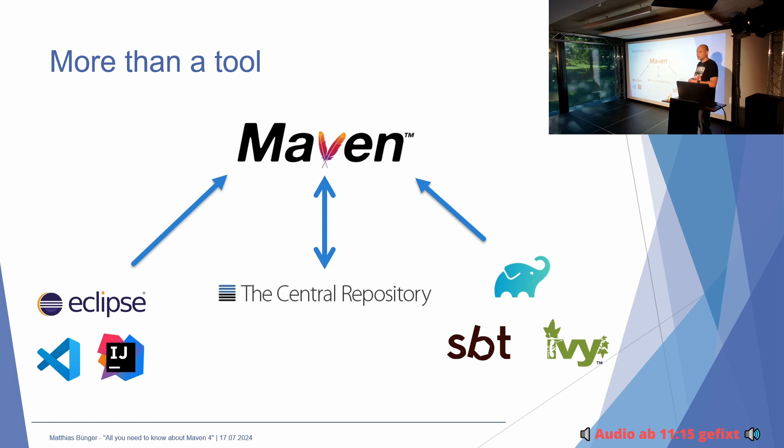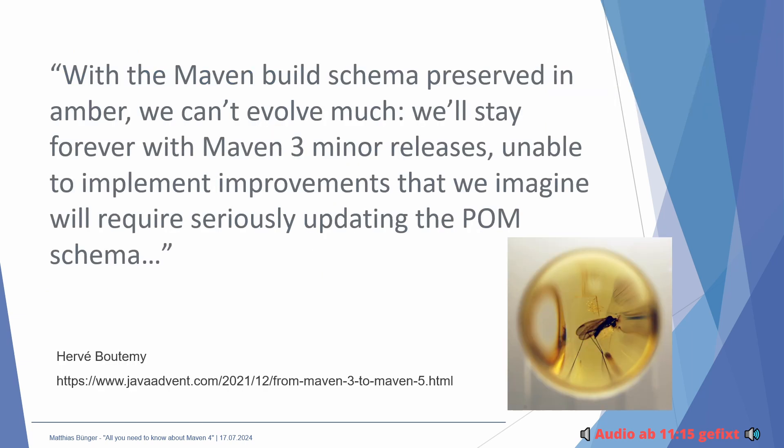Das heißt, wenn man jetzt einfach hingeht und sagt, wir machen jetzt eine neue Maven-POM, dann funktionieren diese ganzen Tools zumindest eine Zeit lang nicht. Und alles, was vorher auf alten POM-Versionen da ist, ist halt auch nicht abwärtskompatibel. Einer der Maven-Maintainer hat mal im Java-Adventskalender von 2021 geschrieben: 'With the Maven build schema preserved in amber, we can't evolve much. We'll stay forever with Maven free minor releases, unable to implement improvements that require updating the POM schema.' Das ist genau das, was ich gerade gesagt habe. Man muss sich ernsthaft Gedanken machen, wie man das hinkriegt ohne das gesamte Ecosystem zu beschädigen.